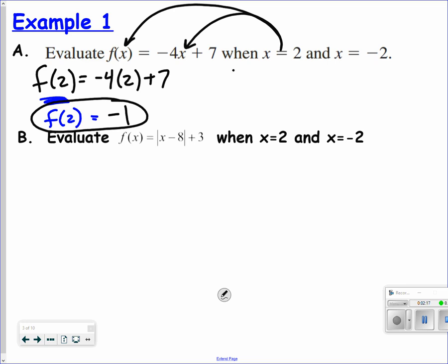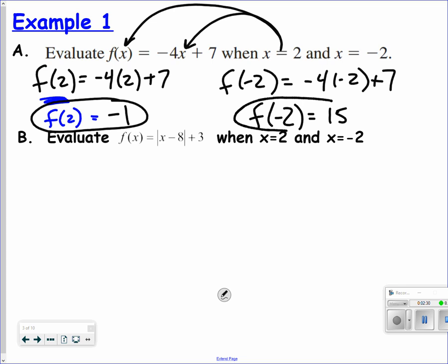So what happens if I put in a negative 2? What do I get out? When I put in negative 2, negative 4 times negative 2 is 8, plus 7, I get out a 15. Notice my notation here: f of negative 2 equals 15. What that is telling me is when you put negative 2 into the f function, you get 15.